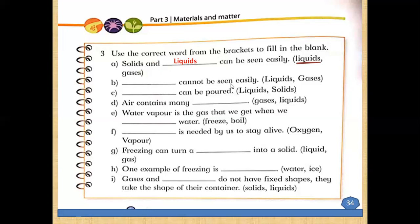Number b: dash cannot be seen easily. What cannot be seen easily — liquids or gases? We cannot see gases. So gases cannot be seen easily. We can see liquids but we cannot see gases.